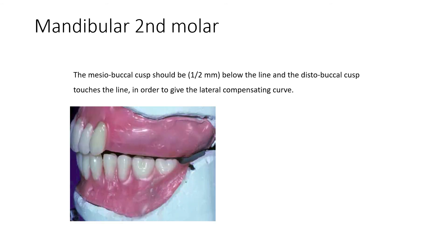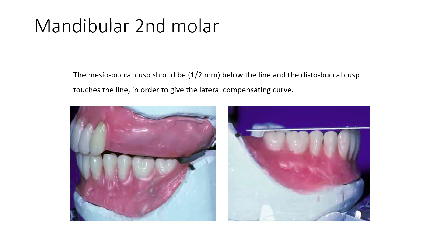This produces what we call the compensating curve. We have the full arrangement: upper anterior, lower anterior, and lower posterior. For the premolar, the lingual cusp is the top line at the center of the retromolar pad. When we have the buccal cusp, it is also at the center of the retromolar pad. This is the compensating curve.